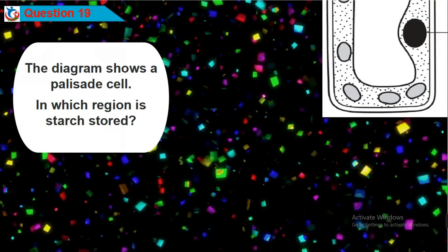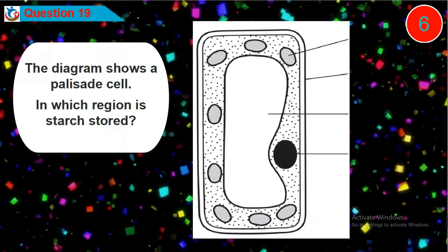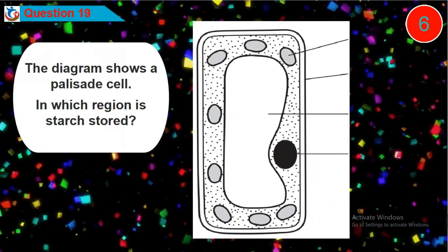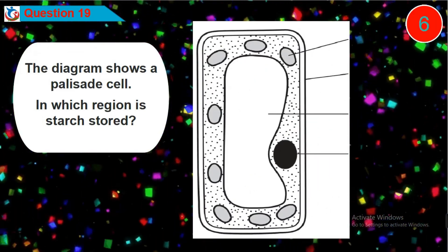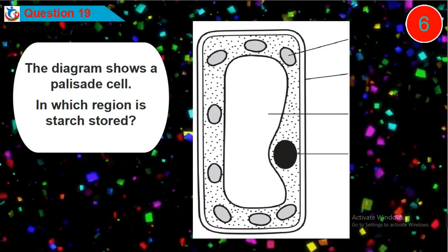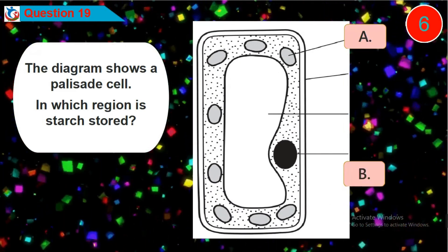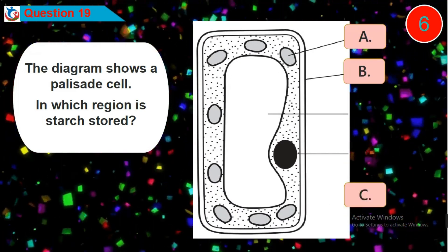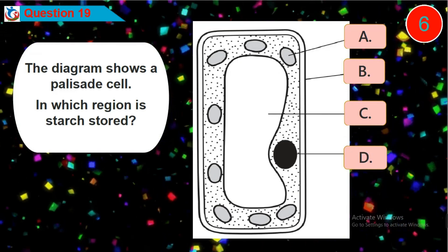Question nineteen: the diagram shows a palisade cell. In which region is starch stored? Is it option A, B, C, or D?